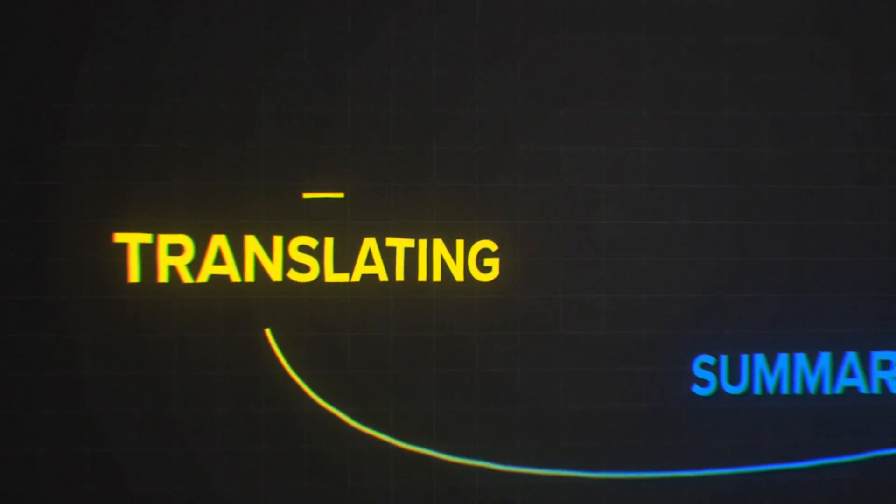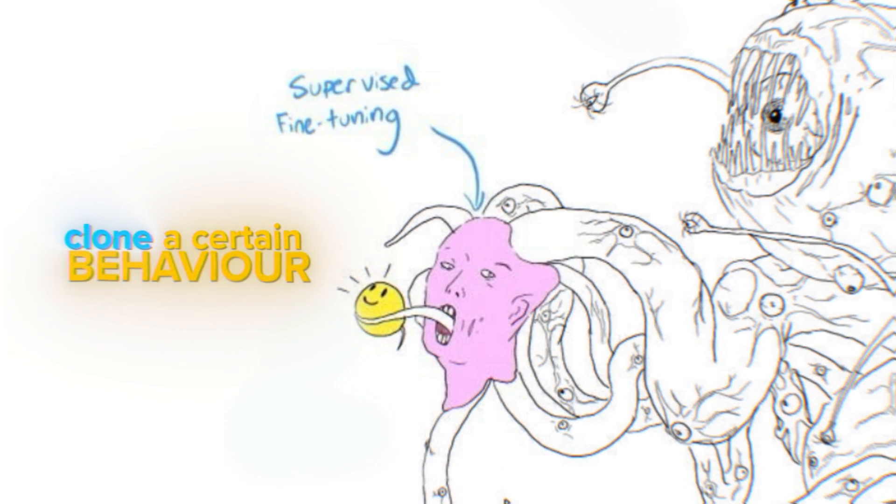The goal of supervised fine-tuning is to teach the pre-trained model to generate the response that you are actually looking for. We already know that the model is good at copying what it has seen — up until now, all the mess from the internet. So we now just give it examples of responses that we actually want to see. This can mean fine-tuning for summarization, translating to another language, or question-answering. In any case, the examples always come as prompt and response pairs — for example, question and answer pairs, or text in English and text in German pairs for translation. Supervised fine-tuning teaches the model to clone a certain behavior and not to rampage around with whatever it wants to complete the prompt with.